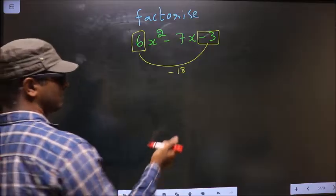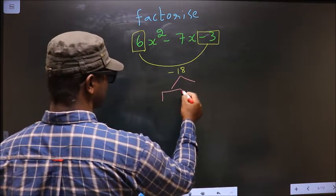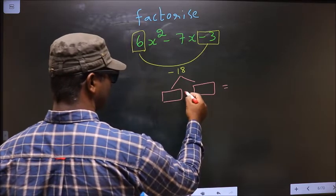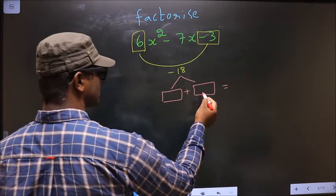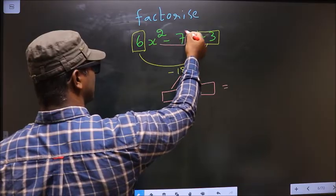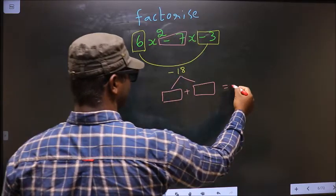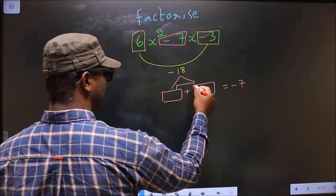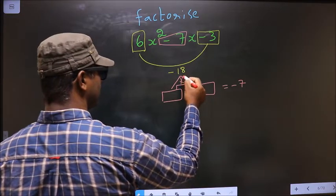Now you should look out for 2 numbers such that when you add these 2 numbers you should get the middle coefficient, that is minus 7, and also when you multiply you should get minus 18.